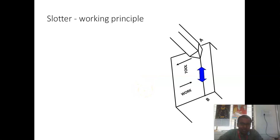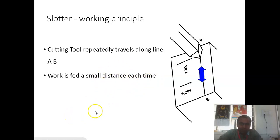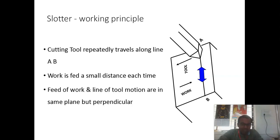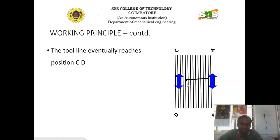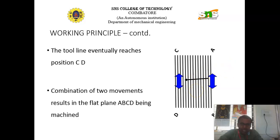This is the working principle of slotting machine. Here the cutting tool repeatedly travels along the line AB. Work is fed a small distance each time. Feed of work and the line of the tool motions are in the same plane but perpendicular to that direction. In this video we are clearly shown that the tool moves from A to B. The tool line eventually reaches the position from AB to CD. This combination of two movements results in the production of flat or plane surfaces, that means the surface from AB to CD is being machined.